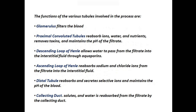The functions of the various tubules involved in the process are: glomerulus filters the blood; proximal convoluted tubules reabsorb ions, water, and nutrients, remove toxins, and maintain the pH of the filtrate; descending loop of Henle allows water to pass from the filtrate into the interstitial fluid through aquaporins; ascending loop of Henle reabsorbs sodium and chloride ions from the filtrate into the interstitial fluid; distal tubule reabsorbs and secretes selective ions and maintains the pH of the blood; and finally, the collecting duct reabsorbs solutes and water from the filtrate.